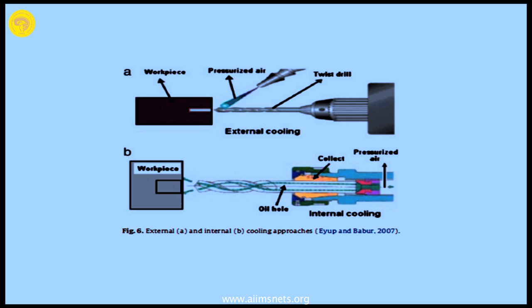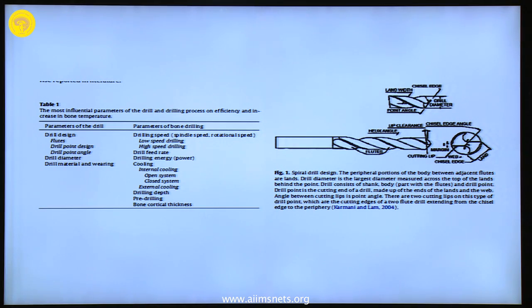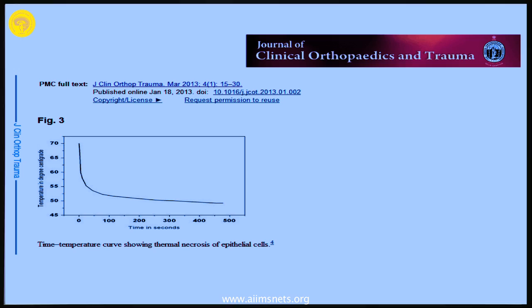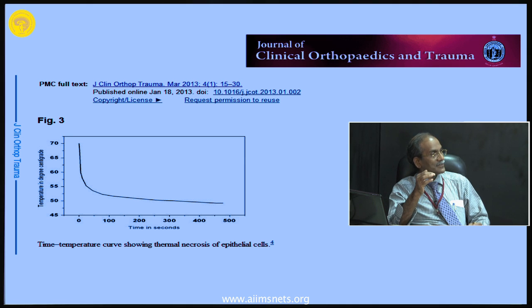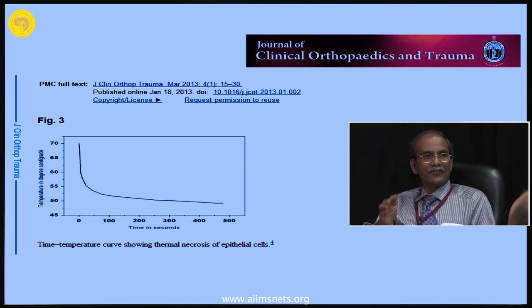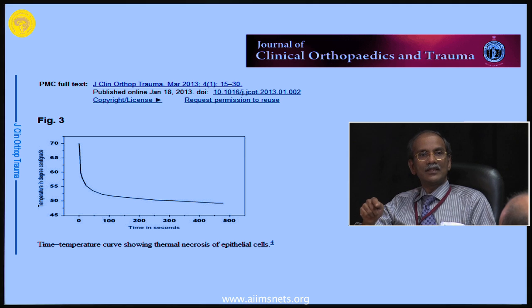Heat from drilling is dissipated by conduction, convection, or radiation. Electrical energy creates an electromagnetic field that passes into the bone. Internal irrigation means water passes through a hollow inside the drill bit at the site, whereas external irrigation is what we do in routine practice. Higher speed means less contact time with the bone, so less temperature exposure — that is why high speed drilling is preferred.